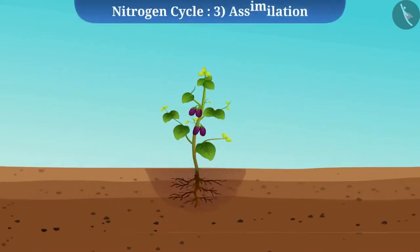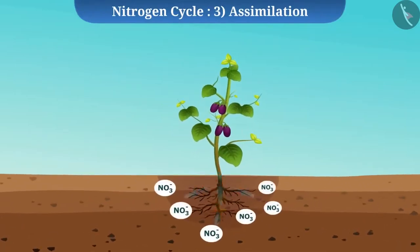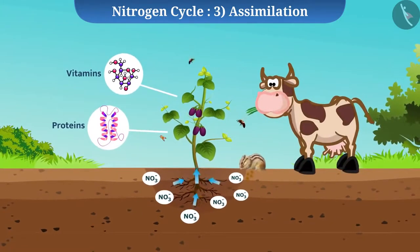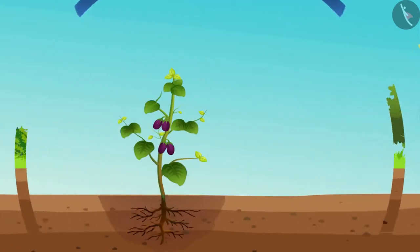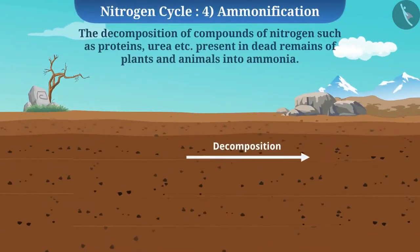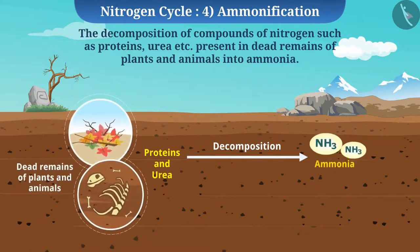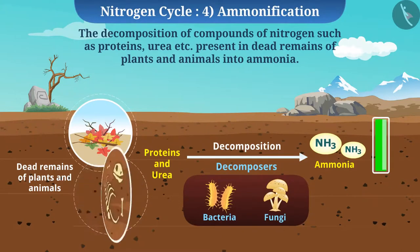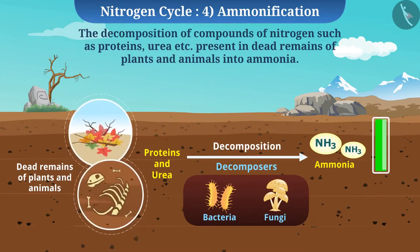The next stage is assimilation. Plants absorb the usable form of nitrogen from the soil with the help of their roots and use them for the formation of proteins and other essential compounds. Through the food web, the nitrogen is transported to other animals. Now, let's talk about ammonification. The decomposition of compounds of nitrogen such as proteins, urea, etc., present in dead remains of plants and animals into ammonia is called ammonification. It is carried out by decomposers such as bacteria and fungi. This process increases the concentration of ammonia in the soil and also helps in cleaning the environment naturally.